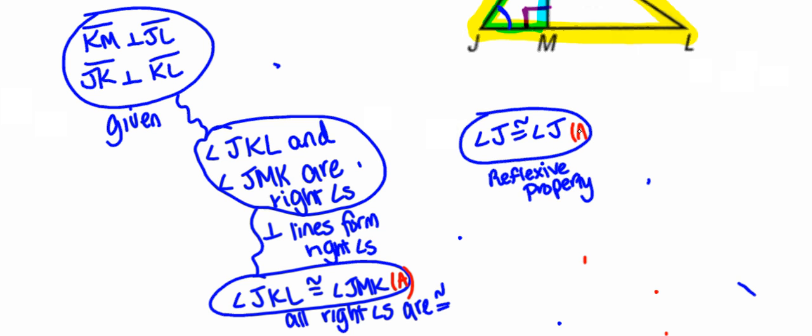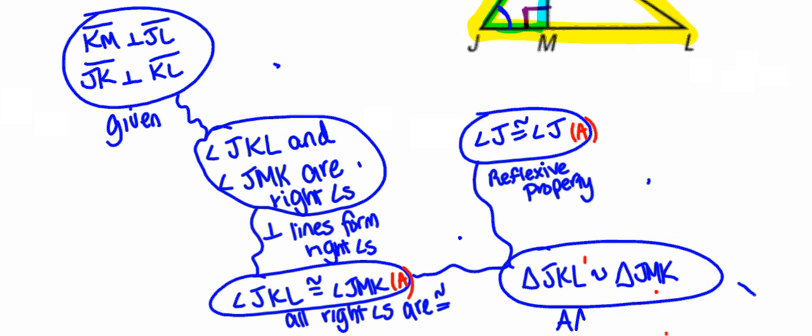So at this point now I've discussed two pairs of congruent angles. I know that the triangles themselves must be similar. So my conclusion is that triangle JKL is similar to triangle JMK. And that would be by the angle-angle similarity postulate.